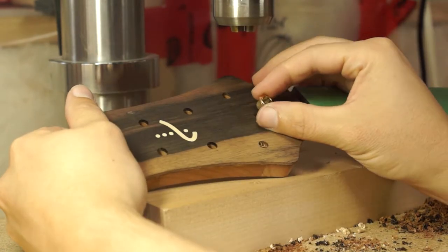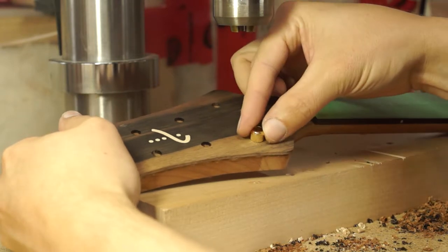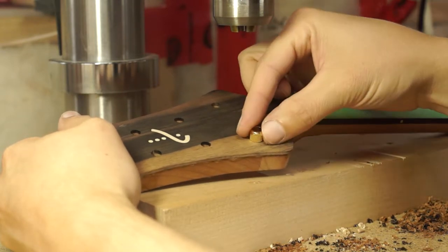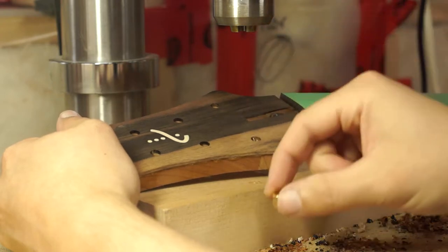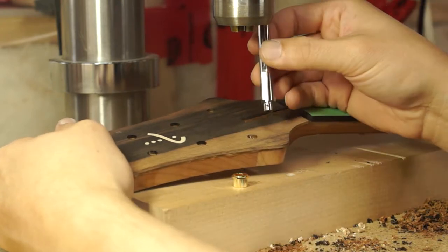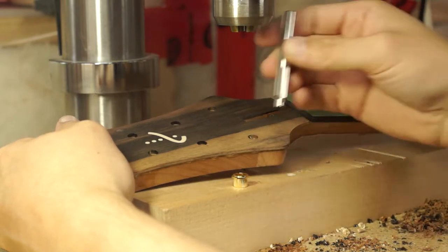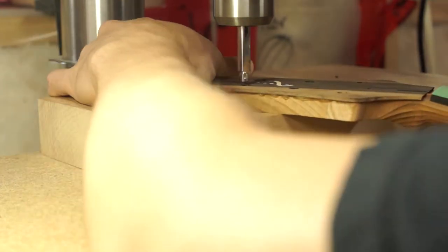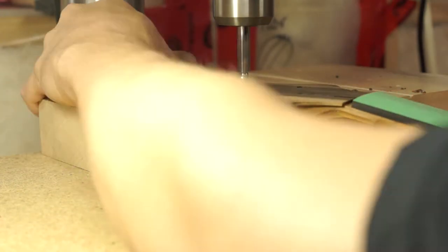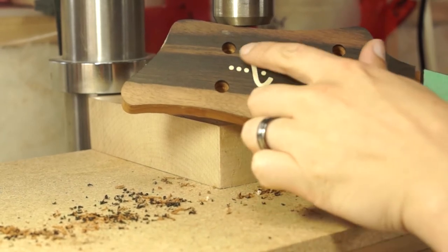These tuners have a ferrule that goes in the top of the hole and as you can see, that's obviously way too small of a hole. So I'm going to use this tool right here to countersink this into the headstock. And there's the countersink for the ferrules.